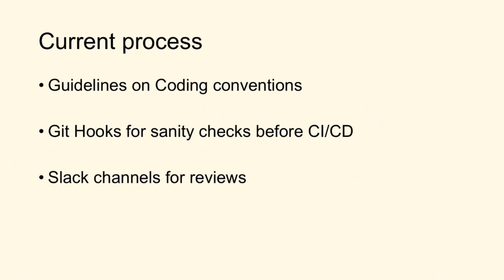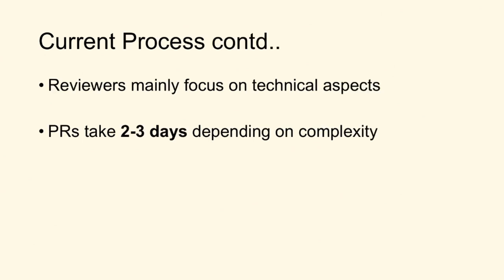We do have a process. You might be thinking large-scale web development — you must have the processes. This probably looks similar to what you've got in your current companies: guidelines on coding conventions, how to raise PRs, git pre-commit hooks that run lint, unit tests, and sometimes automation as well. We have Slack channels for review where you post your PR, and there's a pool of reviewers for a particular day who will pick it up. The thing is, reviewers need not necessarily be from the same team, so they focus more on technical aspects and less on functional aspects. Typically a PR can take two to three days for review.